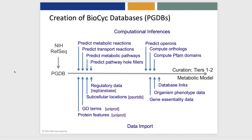Here's the overall process used to create new pathway genome databases, as we call the BioPsych databases. It combines import of information from a variety of databases with computational inferences. The process begins with an annotated genome, most of which are obtained from the NIH RefSeq database.